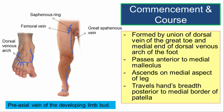The great saphenous vein is the pre-axial vein of the developing limb bud and is the longest superficial vein in the body. It is formed by the union of the dorsal vein of the great toe and the medial end of the dorsal venous arch. This picture shows the dorsal venous arch and the formation of the great saphenous vein from these two structures.